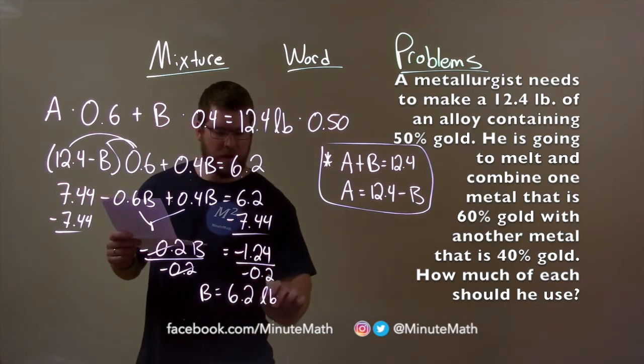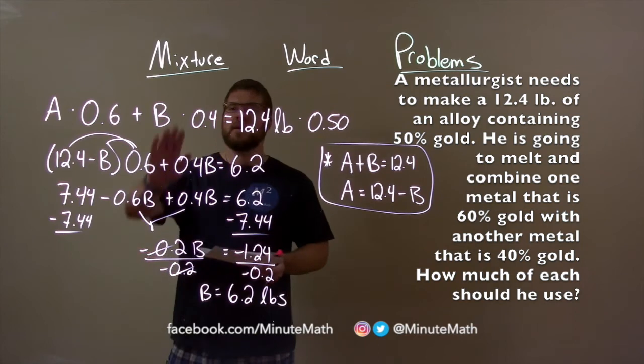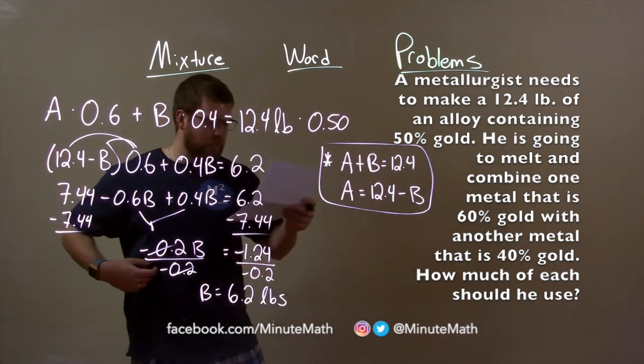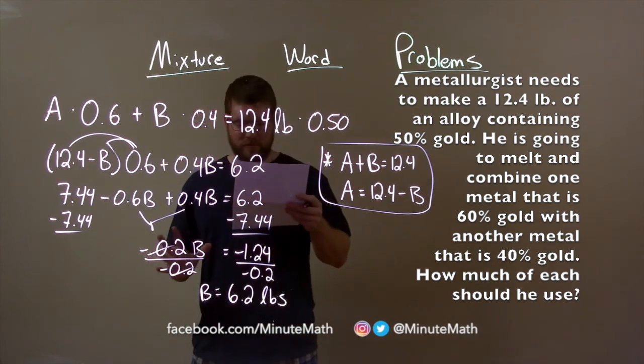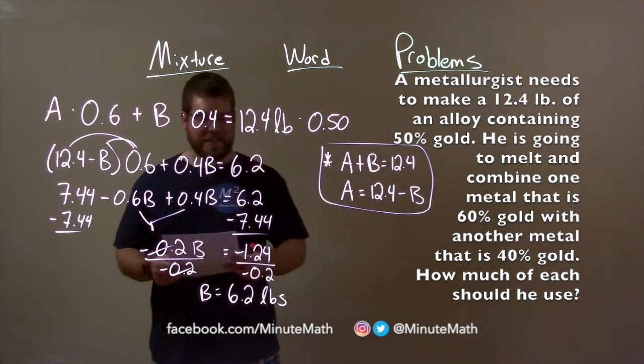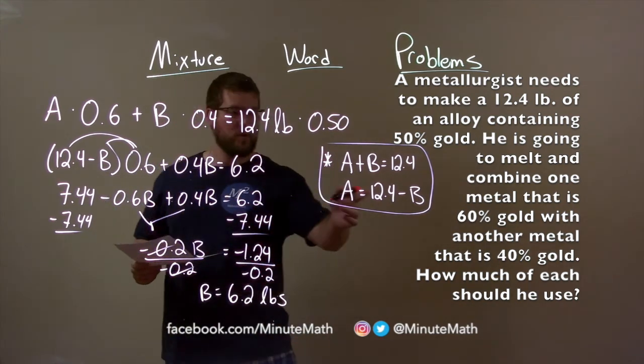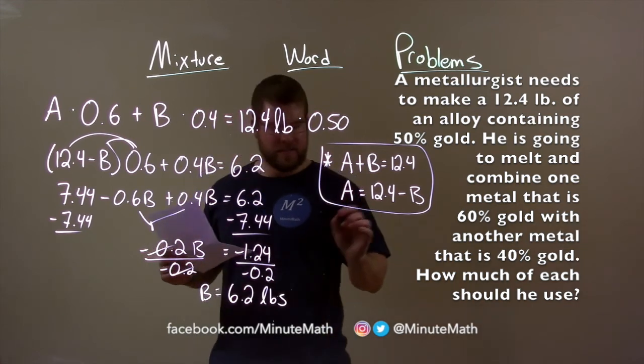So, now we know our second metal, which is 40% gold concentration or mix containing 40% gold, is 6.2 pounds. We use this equation here to get what A is.